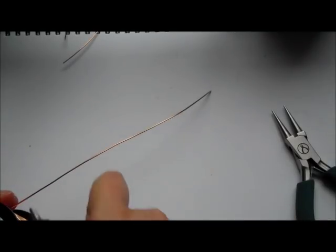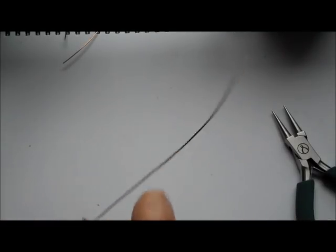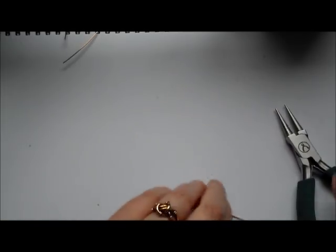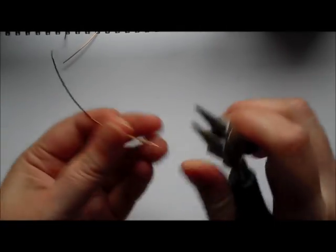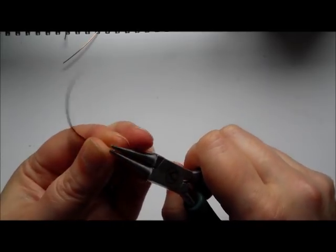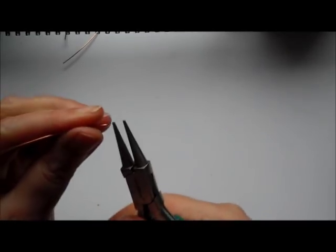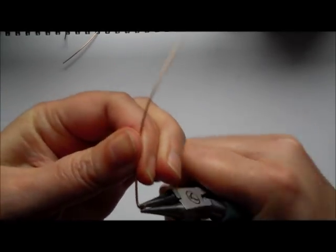This is a little bit thicker. This is a 1mm wire or an 18 gauge. But it works exactly the same way. So round nose pliers onto the very end. And turn. Turn. So you get a nice grip.